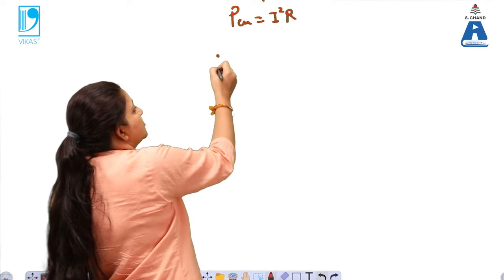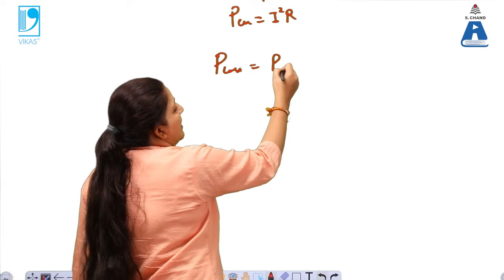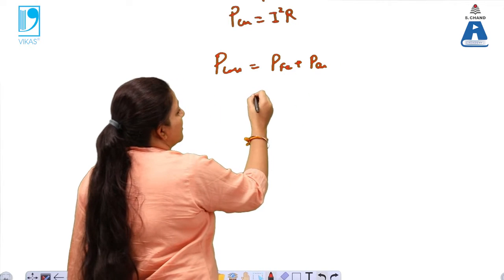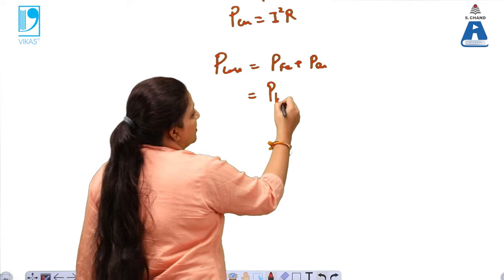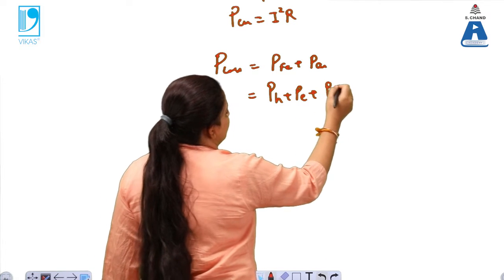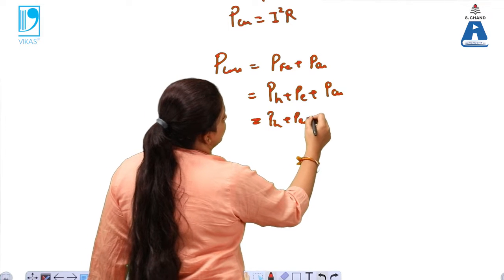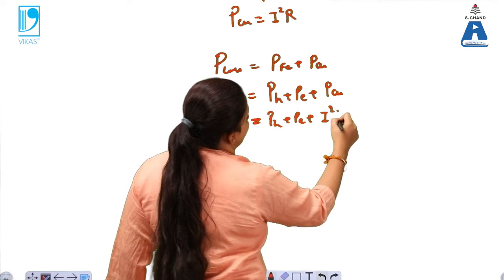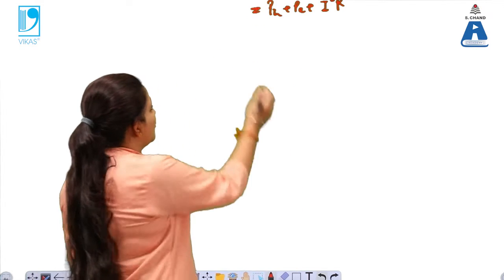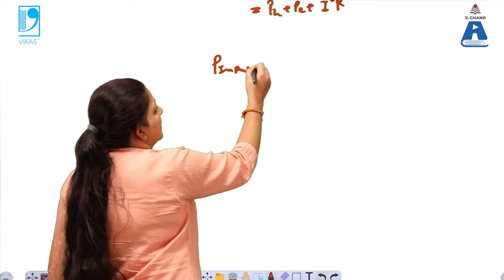The total loss in a transformer equals iron loss plus copper loss. Iron loss is the sum of hysteresis loss plus eddy current loss, and copper loss is I²R. So: Total loss = P_hysteresis + P_eddy current + P_copper.